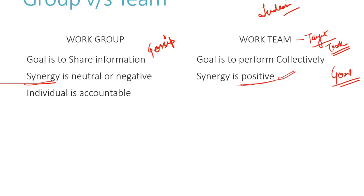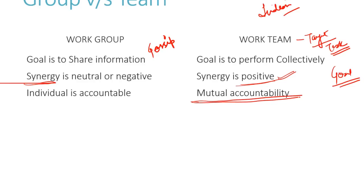The third point is accountability — who takes it and who is responsible? In a group, it is individual accountability. For example, somebody from marketing, somebody from HR, somebody from engineering — they formed a group, and everybody is doing their own job. So individual accountability applies: if someone's work is wrong, you ask that individual why it went wrong. On the other side, in a team, we have mutual accountability. If the Indian team wins, everyone gets the credit; when they lose, everybody is accountable.